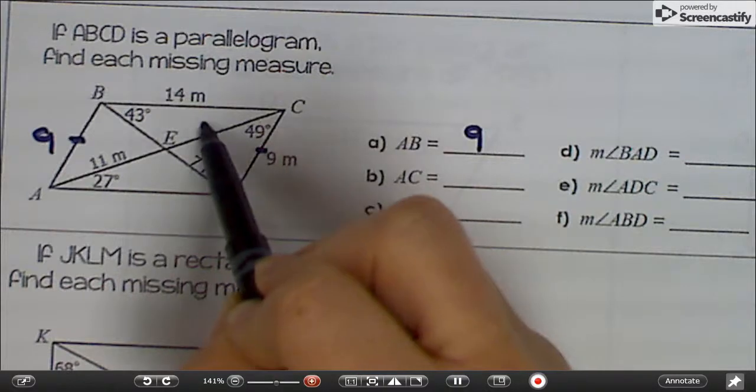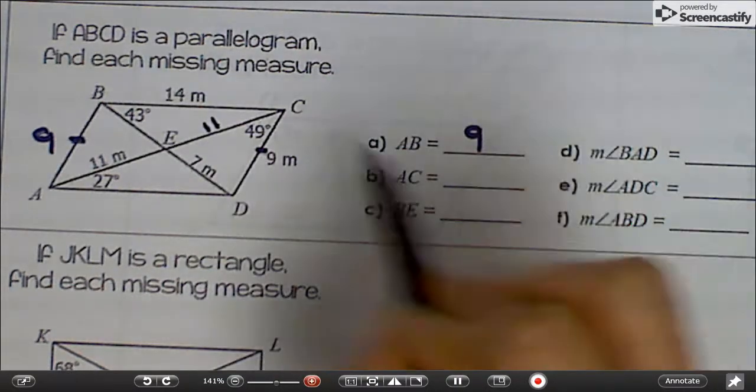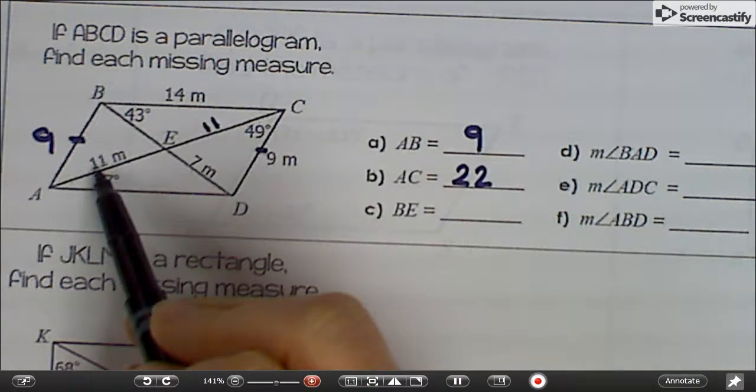So if this is 11, this has to be 11. So the whole thing would be 22, 11 plus 11.